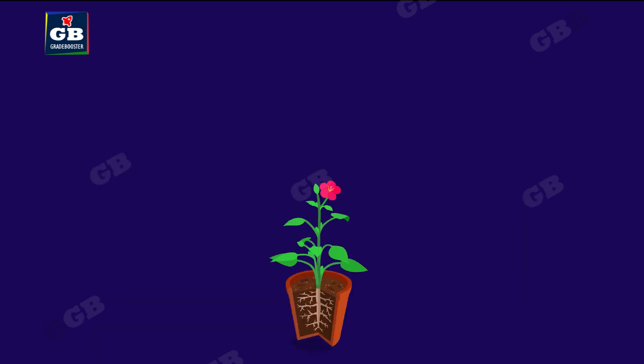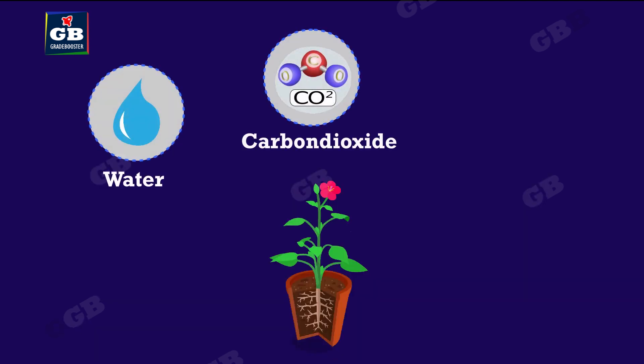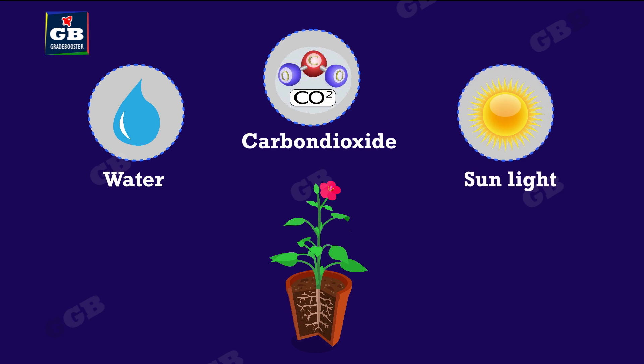How do plants get their raw materials for photosynthesis? Carbon dioxide enters the leaf through small pores called stomata, present on the underside of the leaf. Water is absorbed from the soil by the roots, and the leaf surface is exposed to the sun to get enough sunlight for photosynthesis.